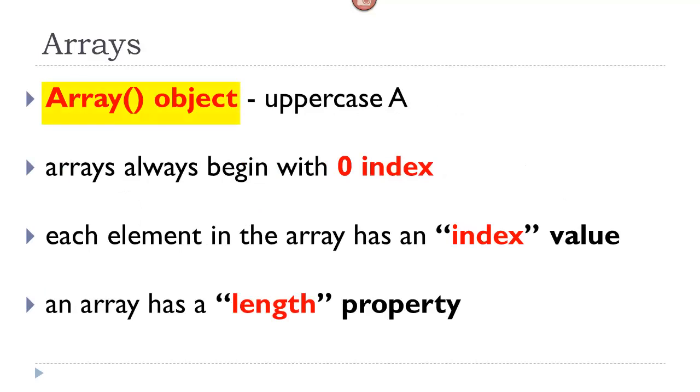An array is created using the array object. Notice that the letter A is uppercase. The elements in an array always begin with the index value of zero. Every array has a length property based on the number of elements in it.